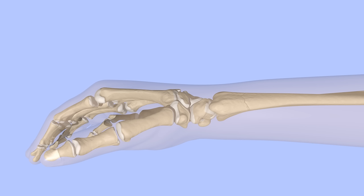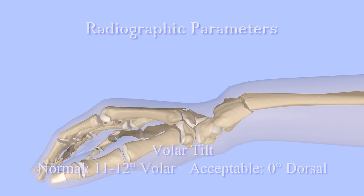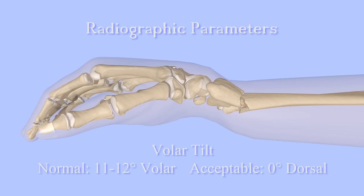The distal radius is generally considered to be well aligned based on certain parameters measured with x-rays. If the fragment is tilted too far forward, it is known as volar angulation. If it is tilted too far backward, it is known as dorsal angulation.